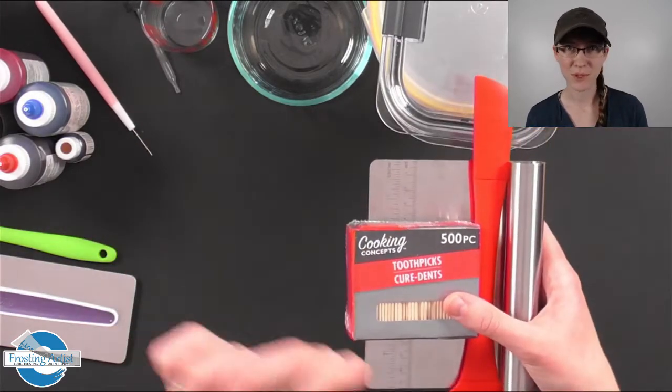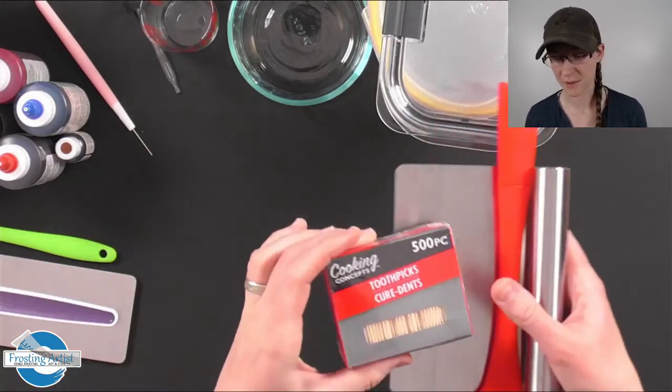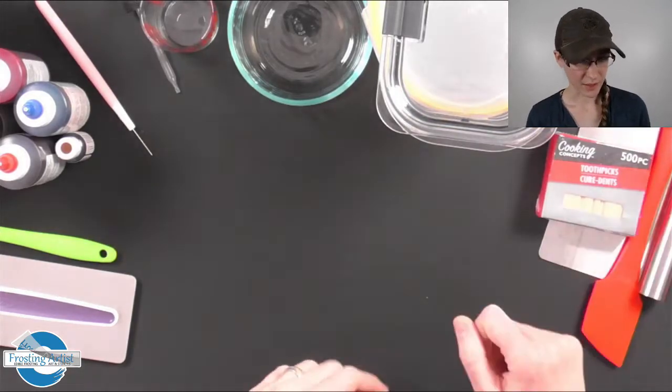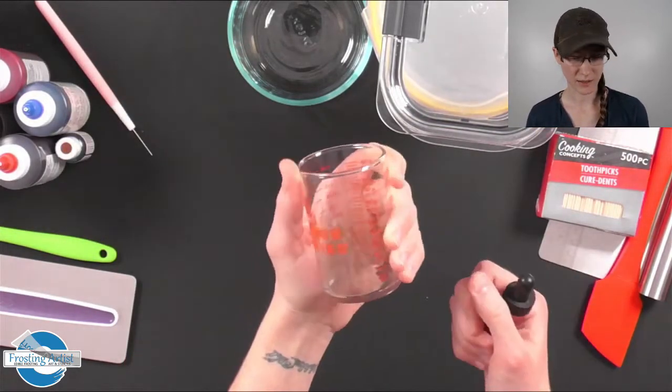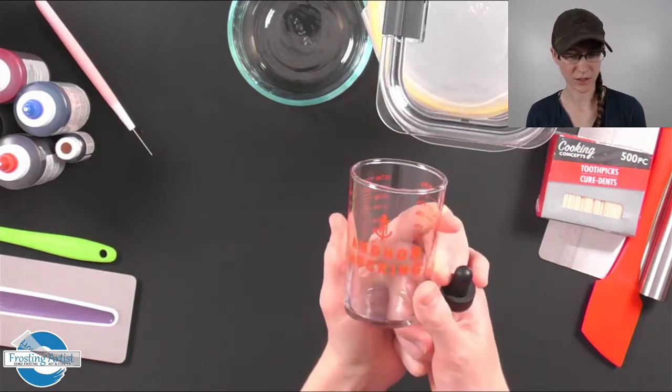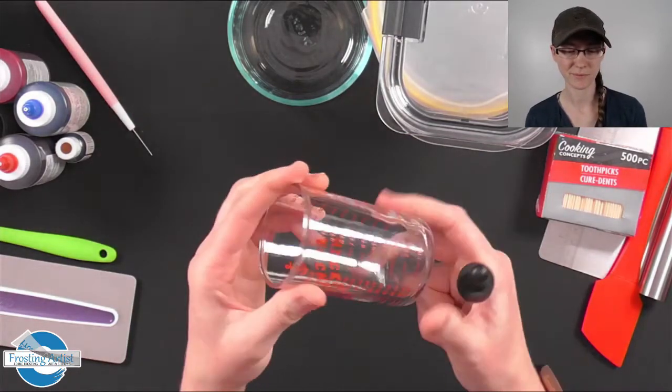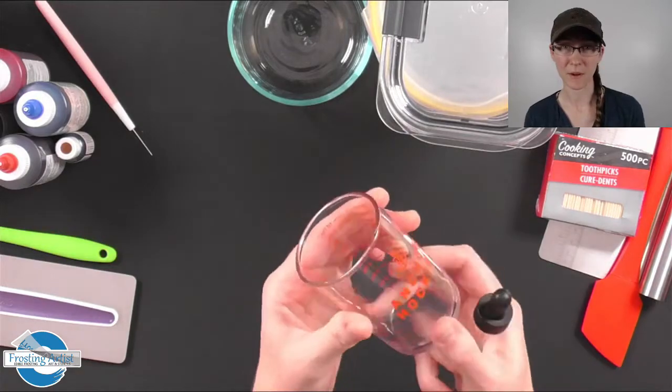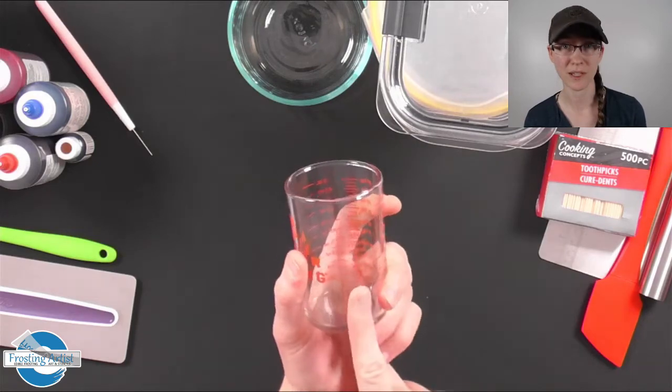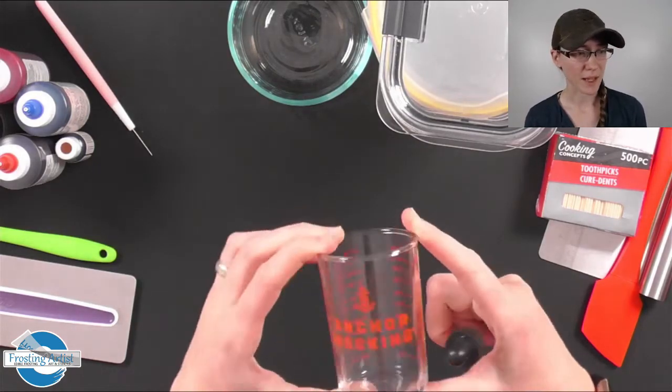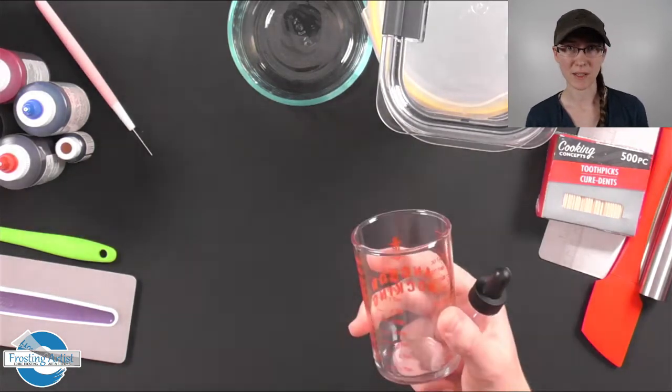Another thing you will need, I like to use this—it's just the Anchor measuring cup, it's the five ounce. I like this one because I can also use it when I make my icing. So if you are using the recipe that I send with my stencils, this is the perfect one.